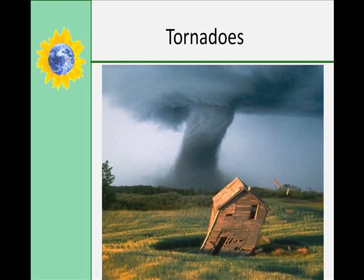Tornadoes are rapidly rotating columns of air around a center that touches the ground. The rotation is typically cyclonic, meaning counterclockwise in the northern hemisphere. On average in the U.S., there are about a thousand tornadoes per year and about a hundred tornado casualties per year. Most occur in tornado alley through the central plains. Tornado season is March to July — spring in the south and summer in the north. Conditions ripe for tornadoes include an unstable atmosphere with warm, humid air below and cool, dry air above, plus strong wind shear.